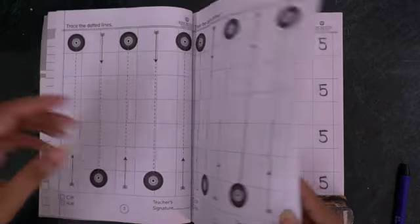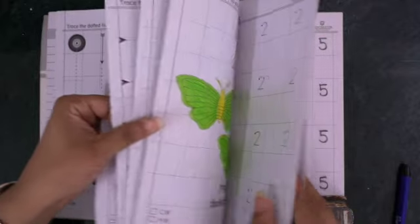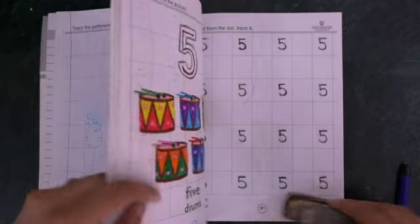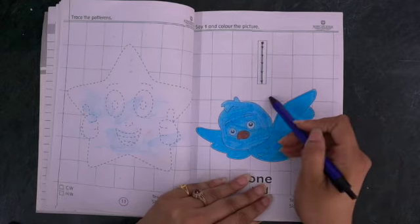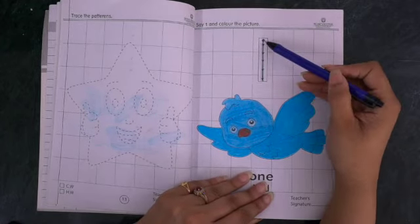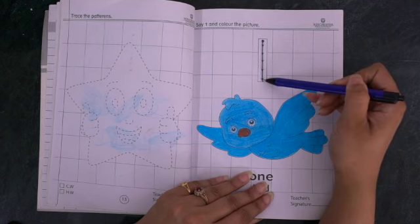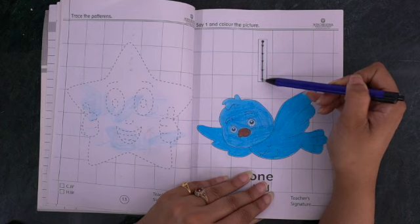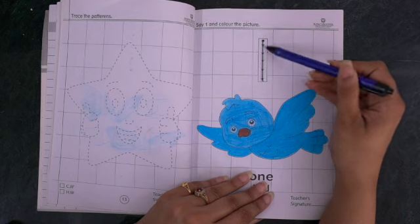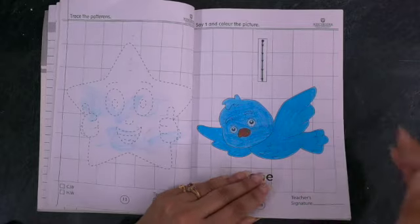This is a quick revision for you all to understand how many numbers we have already done. We started with number one. How do we write number one? Let's start writing. Number one starts from this dot, we go all the way down. Dot to down, it's all in one arrow. This is number one.